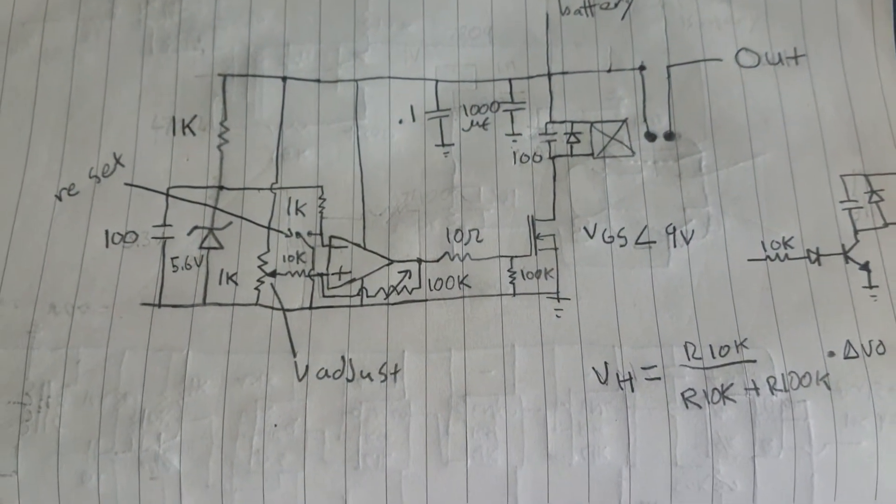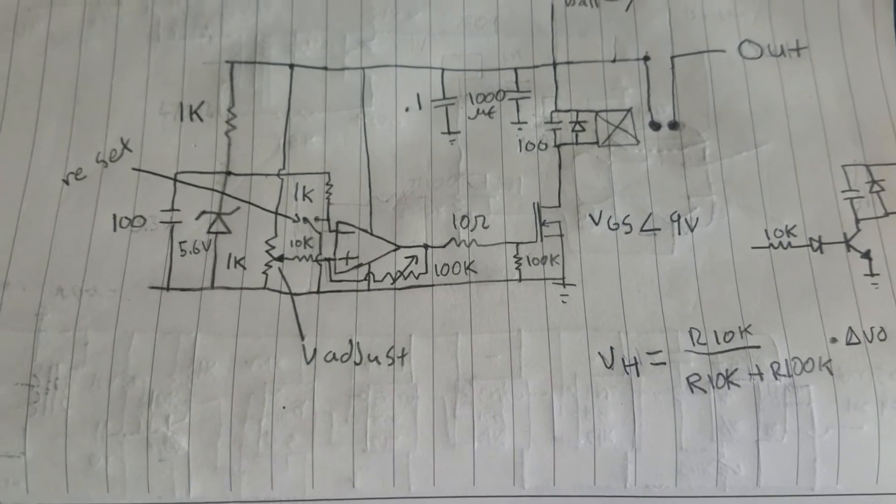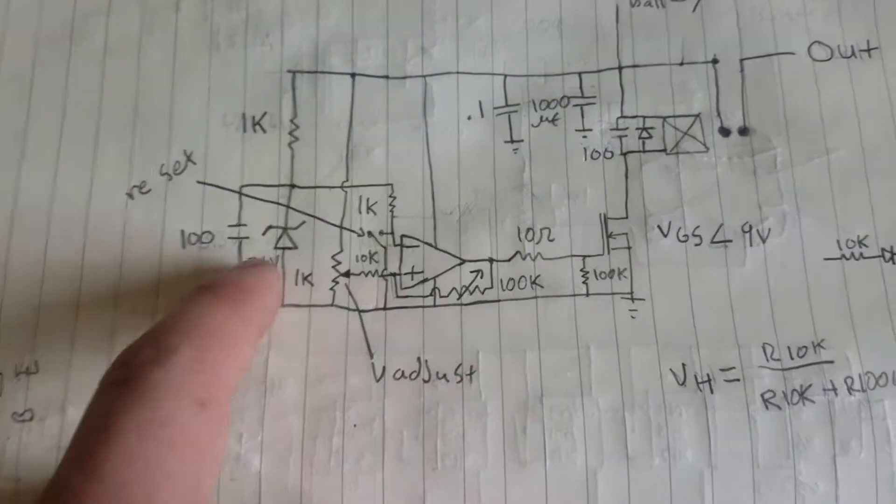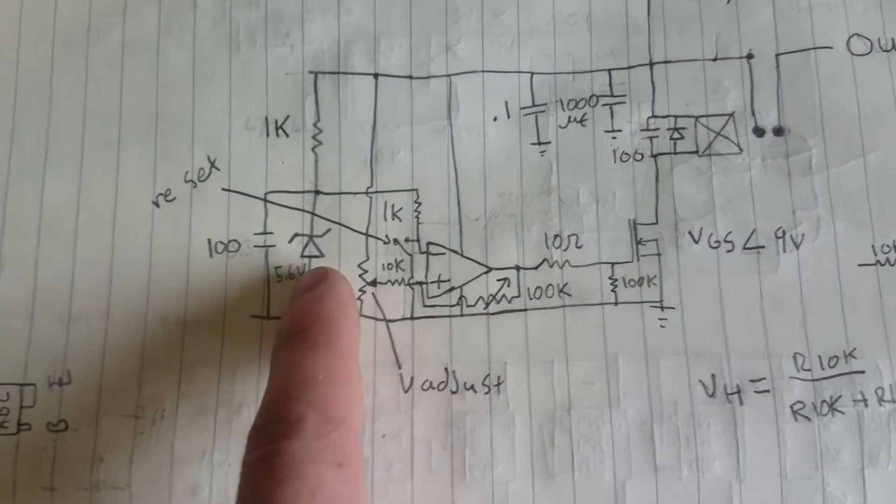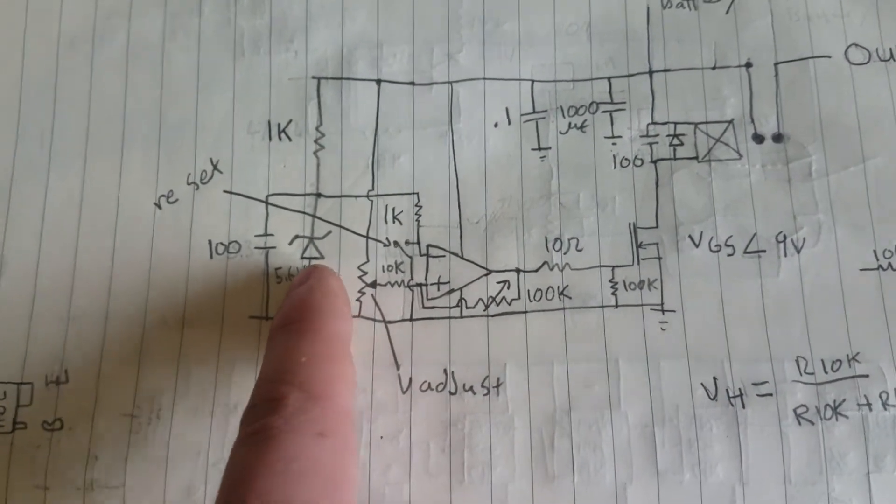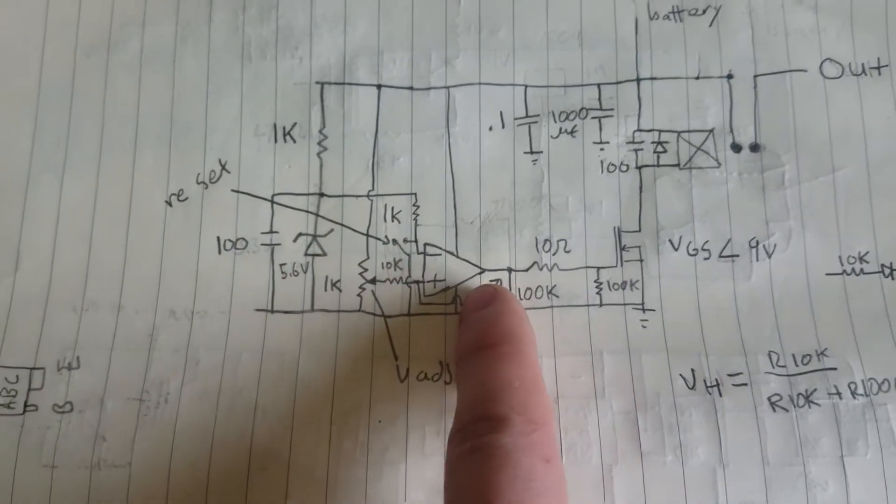It is basically a simple op amp acting as a comparator with hysteresis. It makes a stabilized voltage supply from the battery power with this zener diode right here, and that's used as the reference voltage for the op amp.